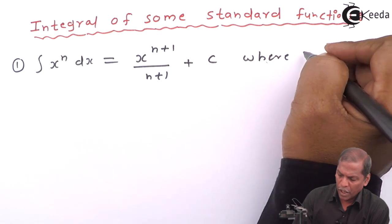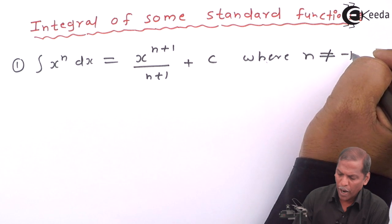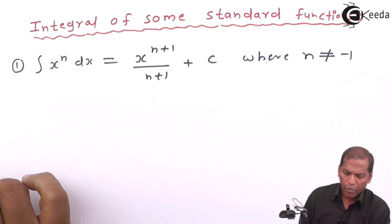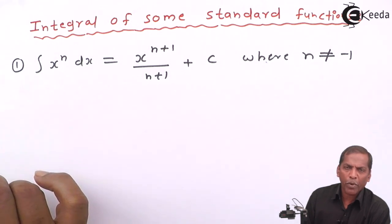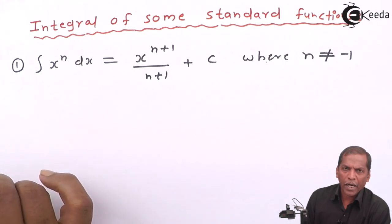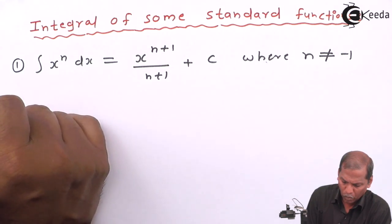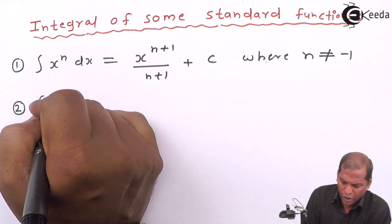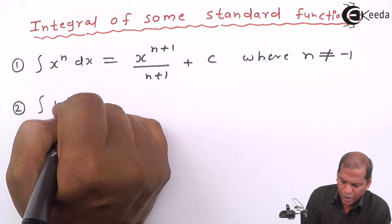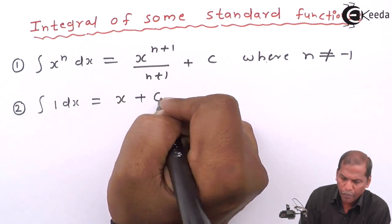Where n is not equal to minus 1. It means this formula or this rule is not applicable when n takes value minus 1. Second formula: integral 1 dx is equal to x plus c.